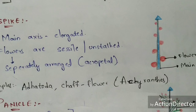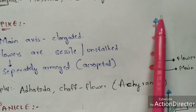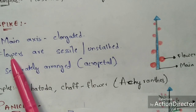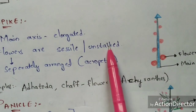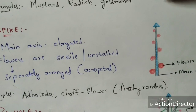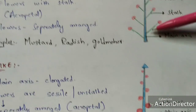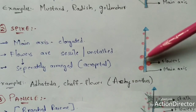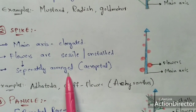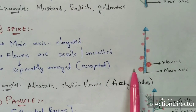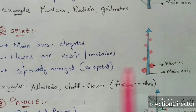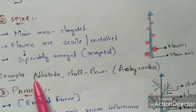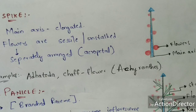Coming to the second type — spike inflorescence. Here the main axis is elongated with unlimited growth, but the flowers are sessile. Sessile means unstacked — in raceme the stalk is present, but in spike the stalk is not present; flowers are directly attached to the main axis. The flowers are separately arranged in an acropetal manner. The best example of spike inflorescence is the Achyranthes (chaff flower).